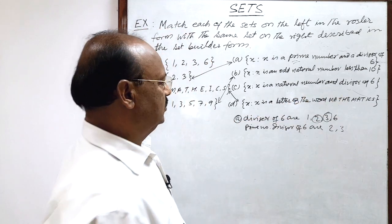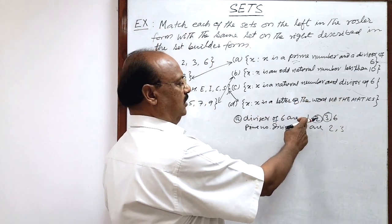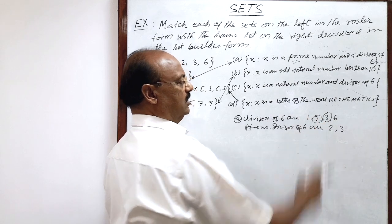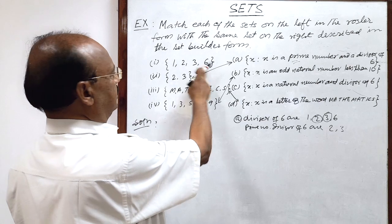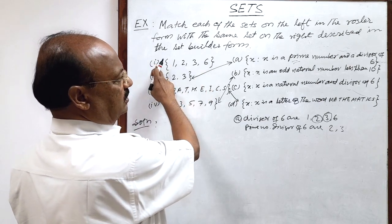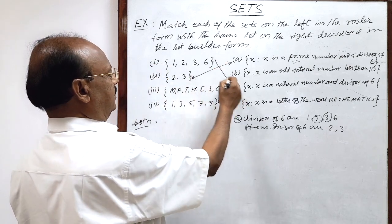And last C is here x is a natural number and divisor of 6. So as we discussed here 1, 2, 3, 6 are natural numbers divisor of 6, 1, 2, 3, 6. So 1 will match with C like this.